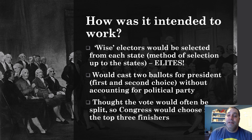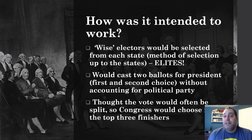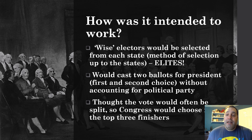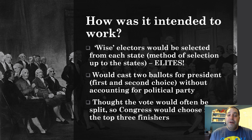The founders also thought that often the vote would be so split among candidates that Congress would end up choosing the president. The House would choose the president and the Senate would choose the vice president, picking among the top three finishers. But this hasn't happened very often because of the party system — we usually have an outright winner. Not since 1824 has the House had to vote on the president, and that was when John Quincy Adams was elected.